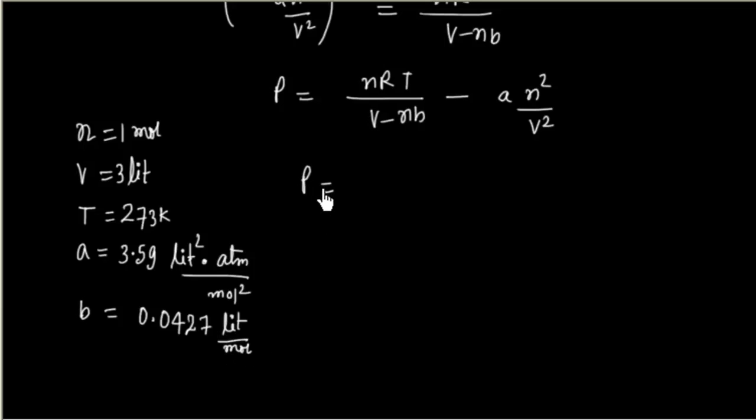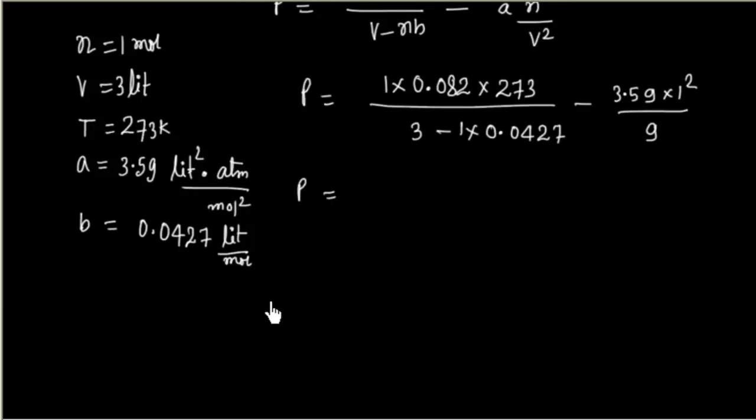Let us plug this value. I am putting the value without putting the dimensions. n is 1, R is 0.082, temperature is 273, divided by volume is 3 liter, minus 1 times B, B is 0.0427. Minus A that is 3.59, n is 1, divided by V squared. V is 3, so 3 squared is 9. We can calculate these two terms separately.